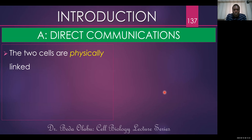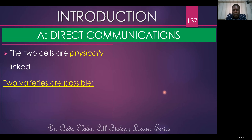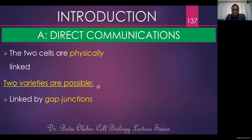When we talk of direct type of communication, this is when the two cells are physically in contact. Direct communication occurs where the two cells are in physical contact. In the indirect type, the two cells are not in contact. When the two cells are in contact, there are two possibilities. You want to know what is actually linking the two cells — one scenario is that the two cells could be linked by gap junctions.